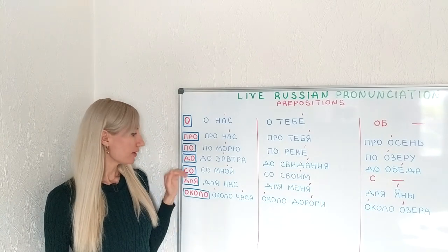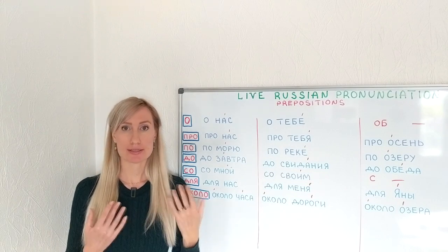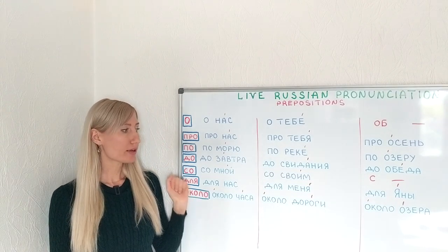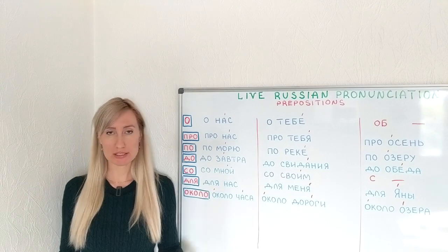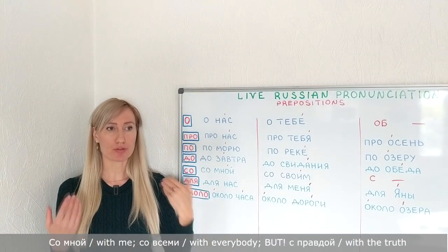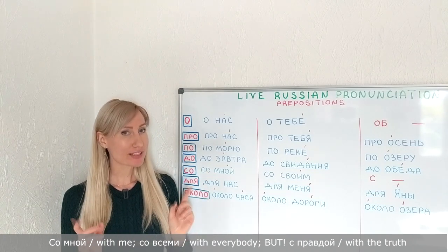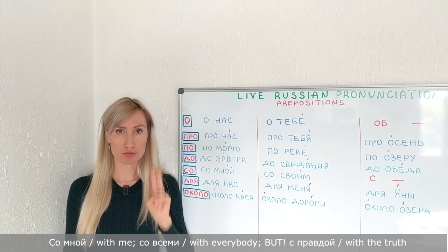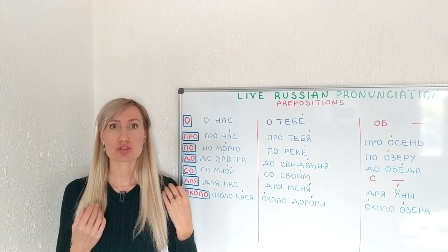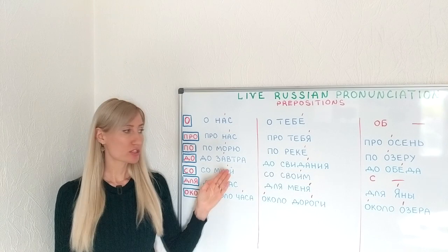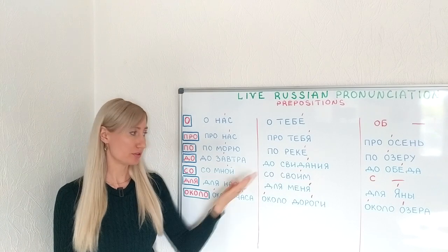Now the preposition СО. It's a version of the preposition С, which means 'with.' When a word starts with С, we use the preposition СО — for example СО МНОЙ (with me), СО ВСЕМИ (with everyone). We would also use СО, but not in all cases when a word starts with two consonants.